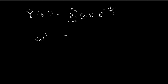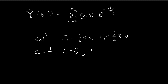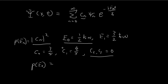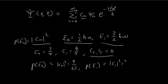There are only two relevant energy levels: E₀ = (1/2)ℏω and E₁ = (3/2)ℏω. From the previous problem, c₀ = 3/5, c₁ = 4/5, and all subsequent cₙ = 0. So the probabilities of getting E₂, E₃, and higher are all 0. The probability of getting E₀ is |c₀|² = 9/25, and the probability of getting E₁ is |c₁|² = 16/25.